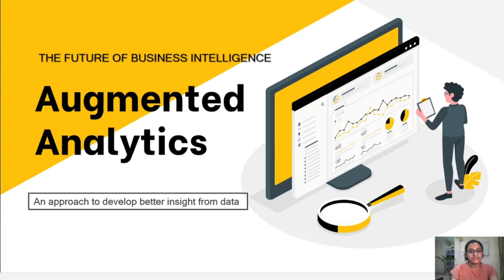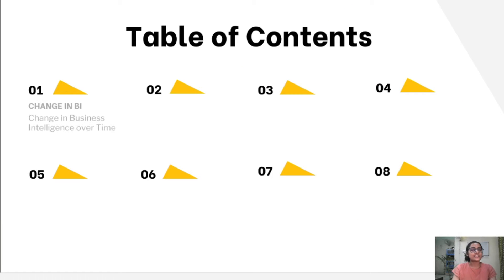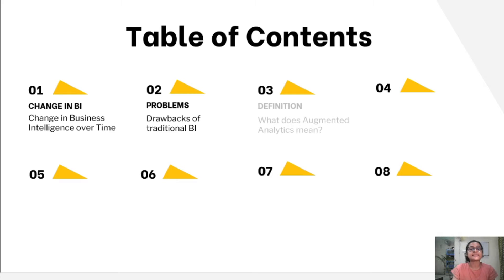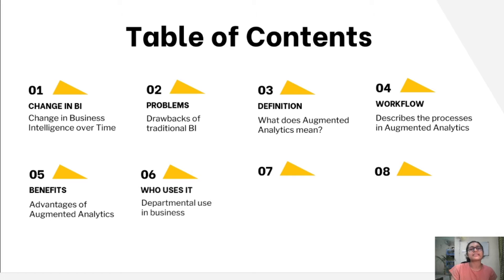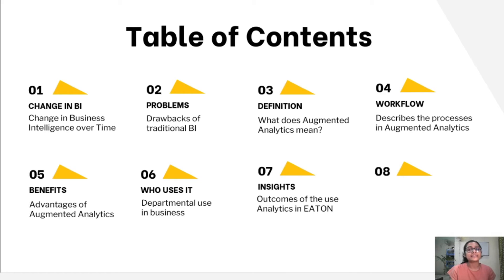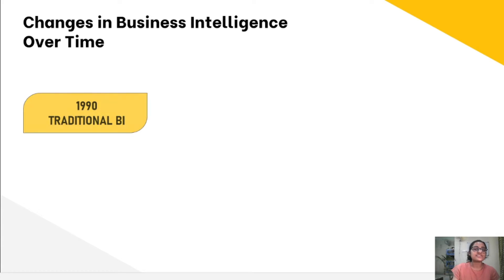Here is the table of contents for this video. We'll be looking at: changes in business intelligence over time, drawbacks of traditional BI that led to augmented analytics, what augmented analytics means, its workflow, the benefits, who uses it inside a business, insights from companies that have already used it, and finally the conclusion.